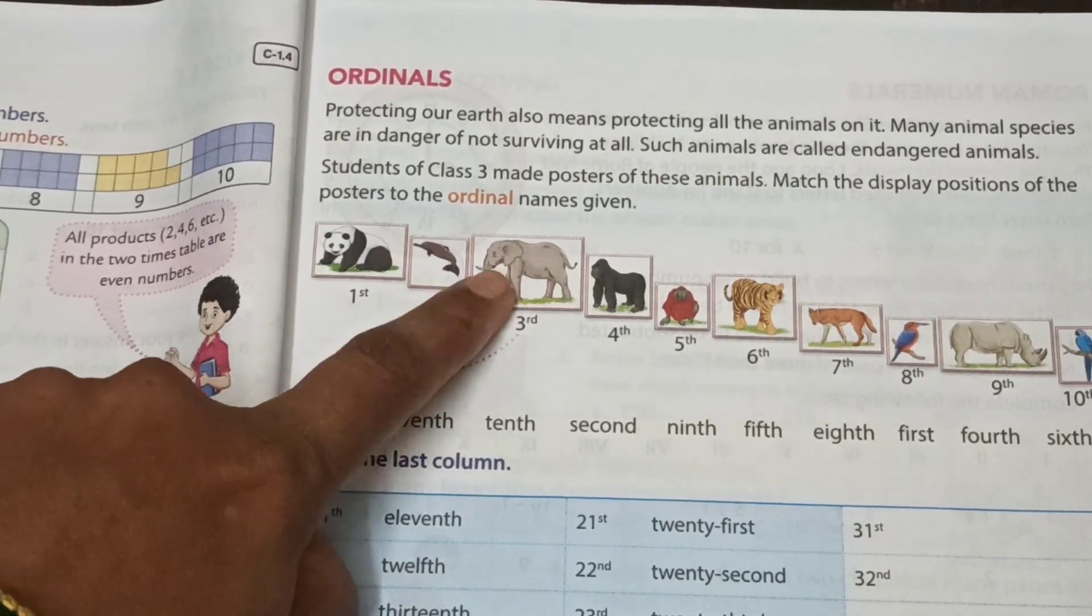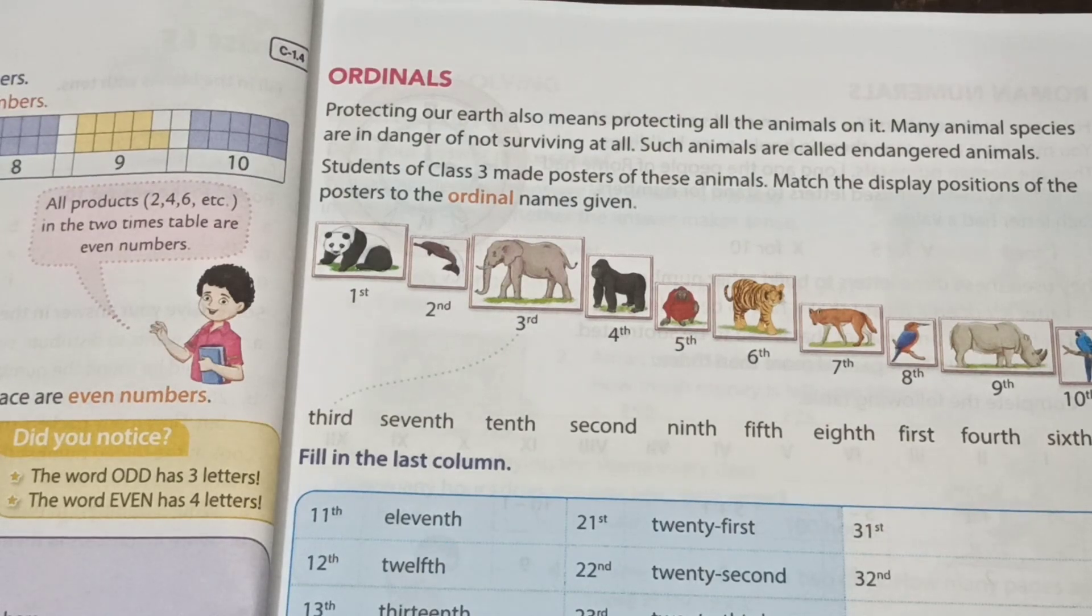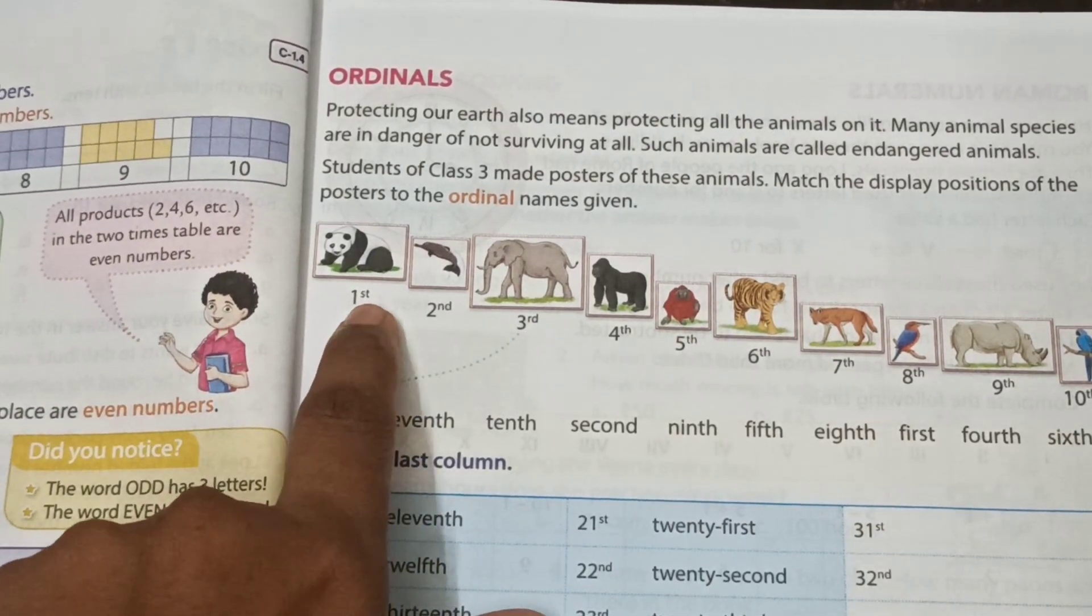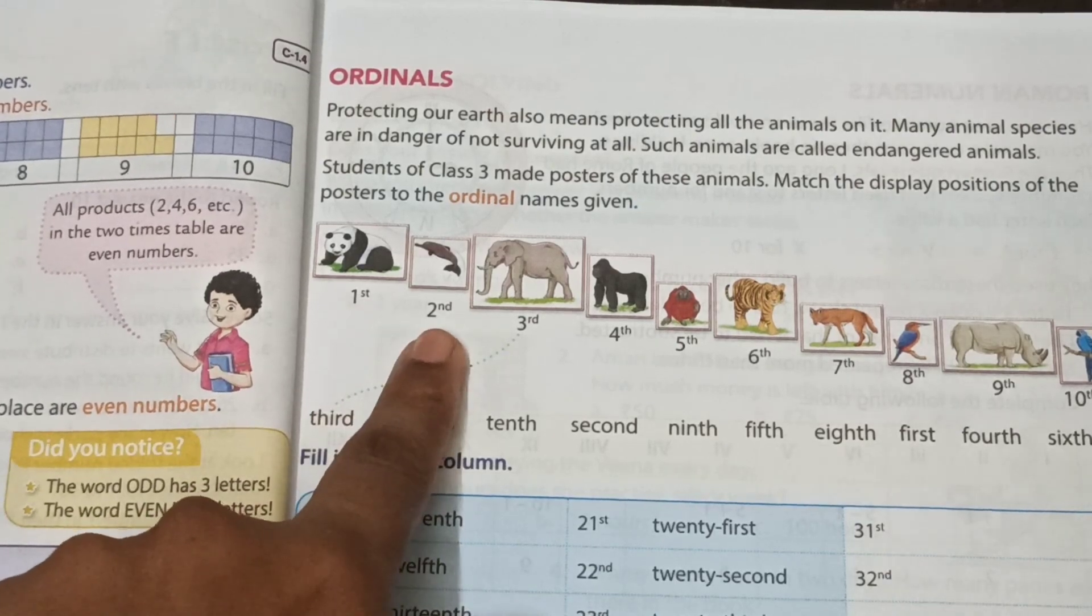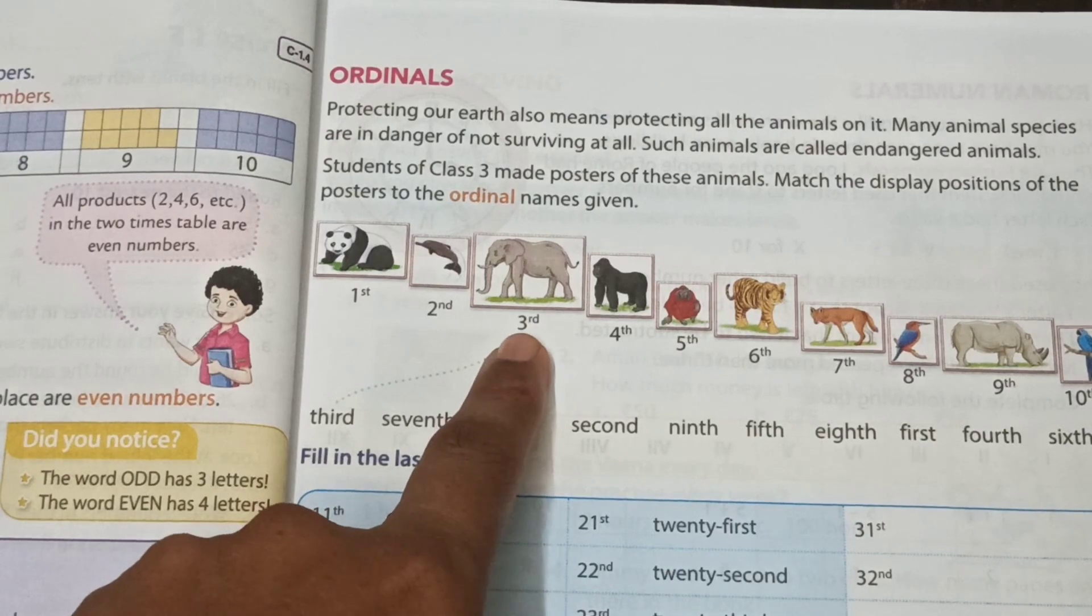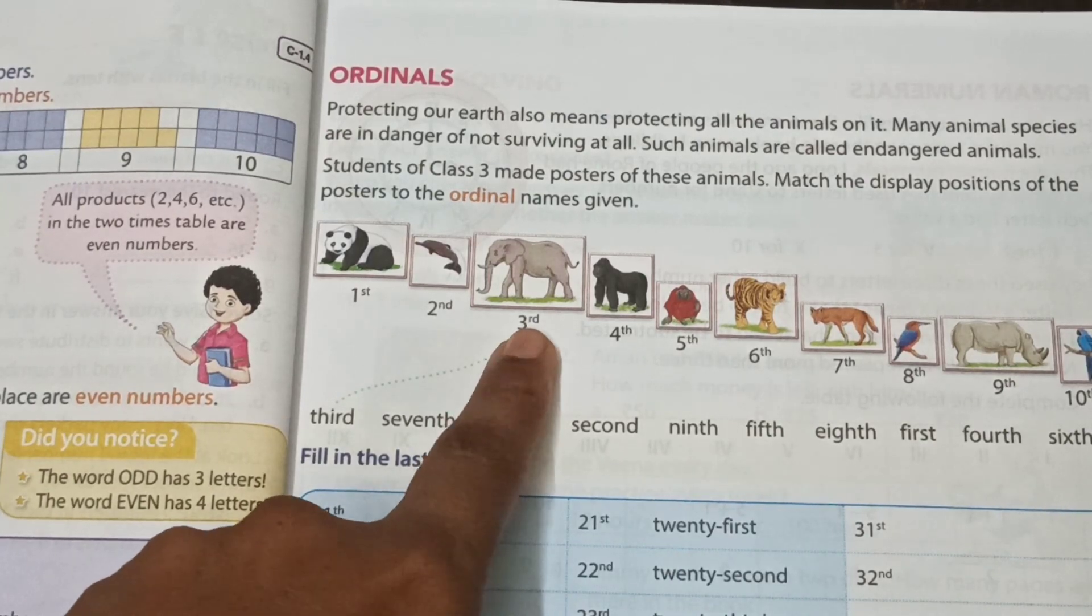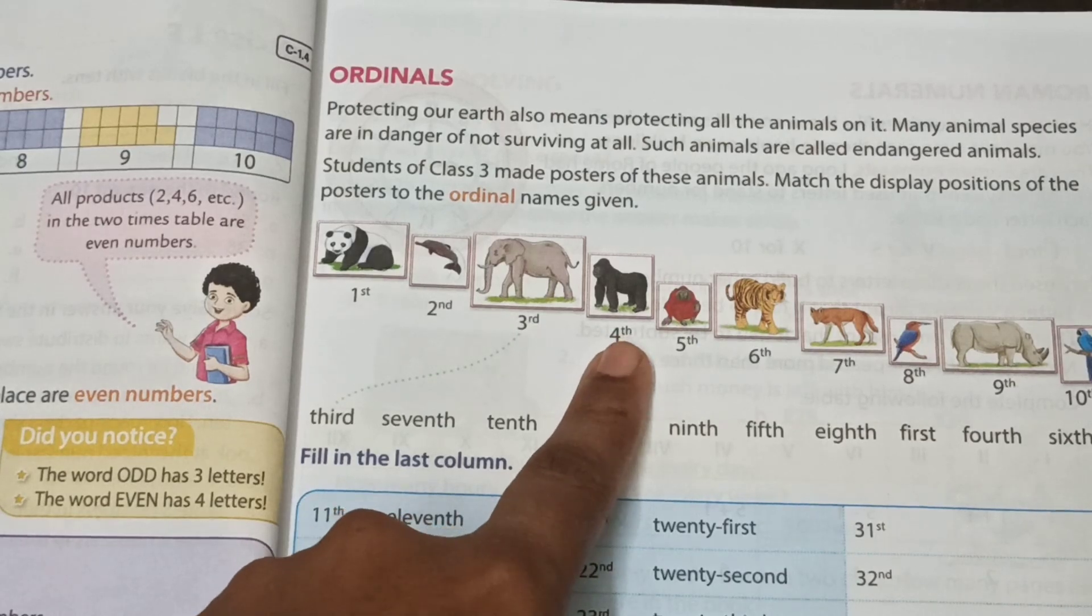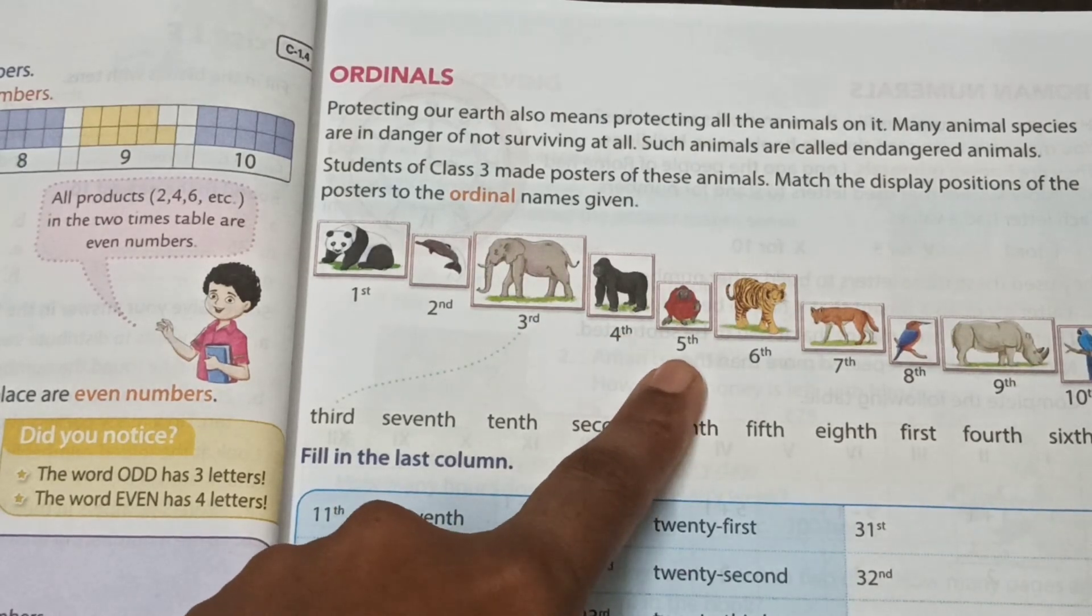Ordinal number means first and write ST on the upside. Second means write down 2 and ND. Third means RD - write 3 and RD on the upside. Fourth: 4 and TH. Okay, all remaining numbers.